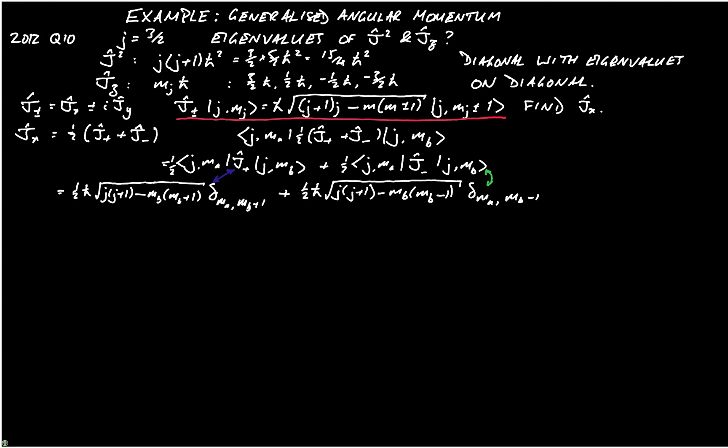Now, what values of m a and m b do we consider? Well, if m a is equal to 3 over 2 and m b is equal to a half, then m a is equal to m b plus 1. So that gives us an entry for j plus.